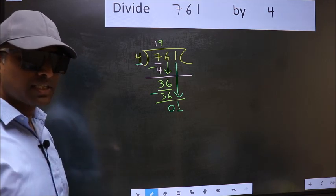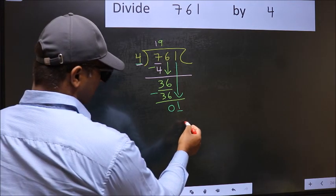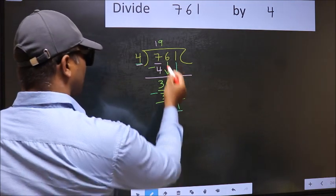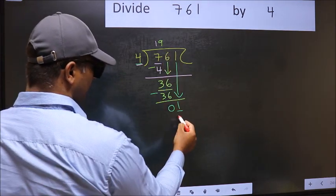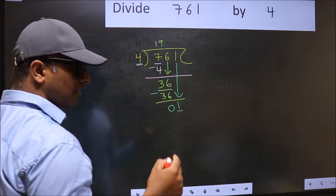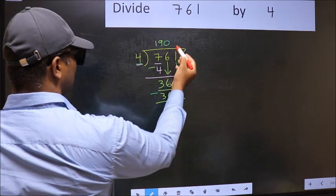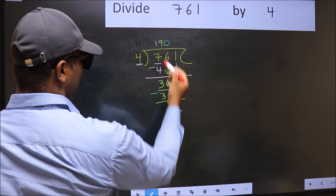Instead, what you should think of doing is, what number should we write here? If I take 1 here, I will get 4. But 4 is larger than 1. So what we should do is, we should take 0. So 4 into 0, 0.